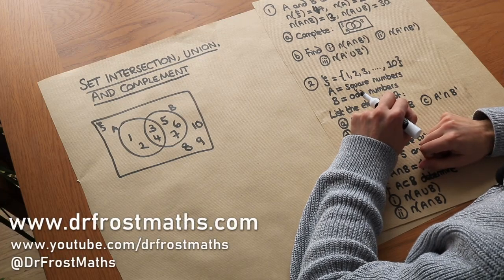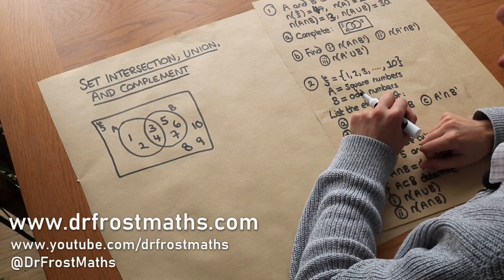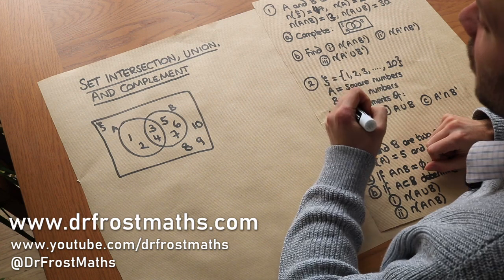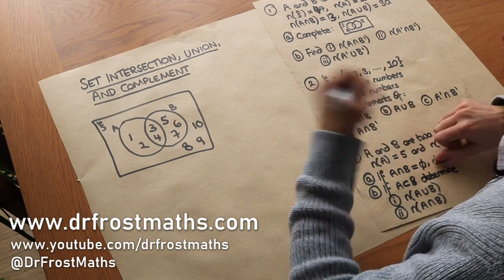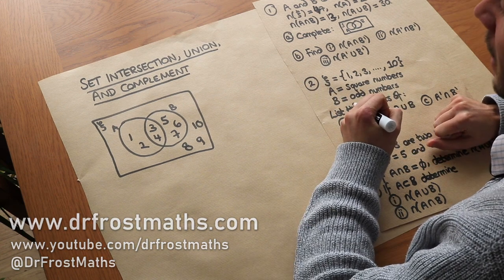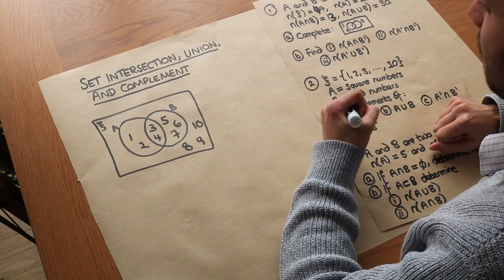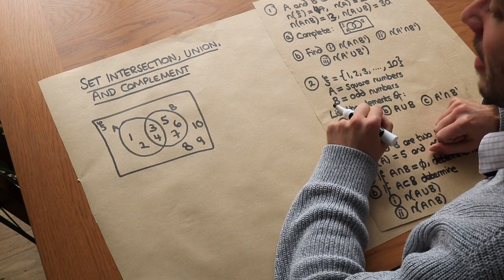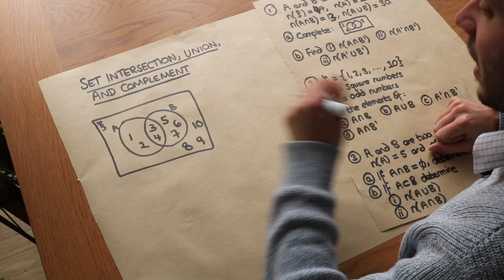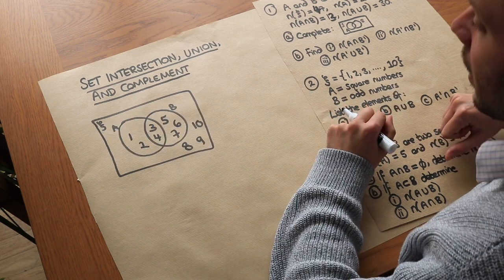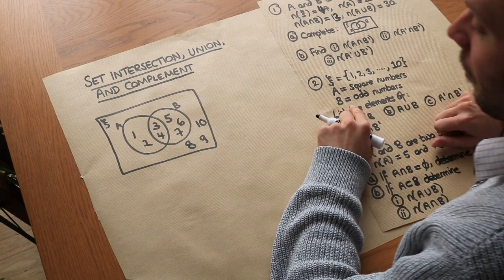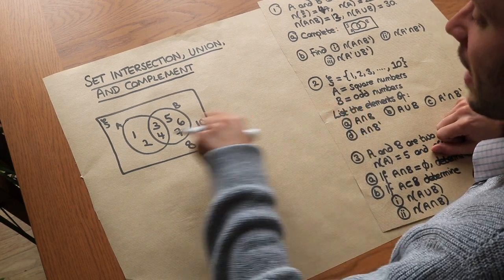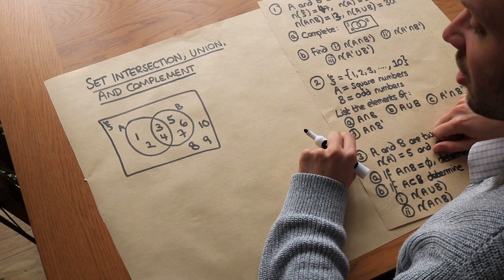Hello and welcome to this video on set intersection, union and complement. In the previous video we looked at how you could form a Venn diagram, and I'm going to presume in this video that you already know what a Venn diagram is and what it means. You might wonder if there's a way we can refer to the items of a Venn diagram in a specific region.